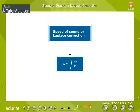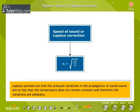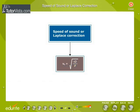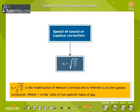Laplace pointed out that the pressure variations in the propagation of sound waves are so fast that the temperature does not remain constant and therefore the variations are adiabatic. Vs equals square root of gamma P by rho is the modification of Newton's formula and is referred to as the Laplace correction, where gamma is the ratio of two specific heats of gas.